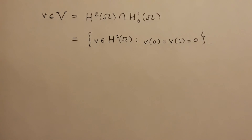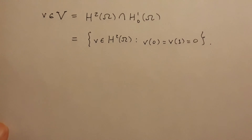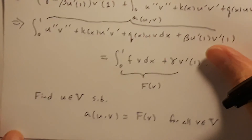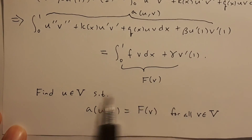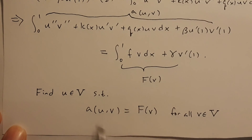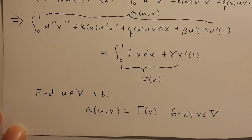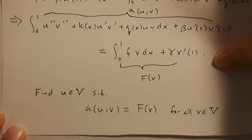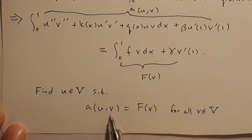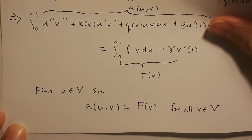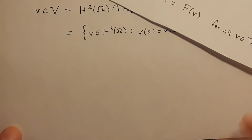What we'll do next is look at proving coercivity of our bilinear form a, and we'll also talk about applying Lax-Milgram so that we can guarantee existence of a unique solution. That's all for now, thank you.